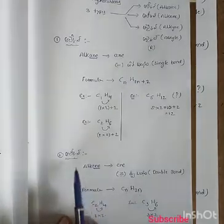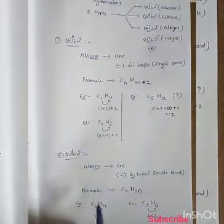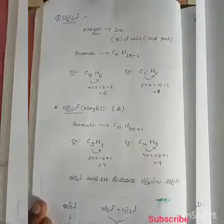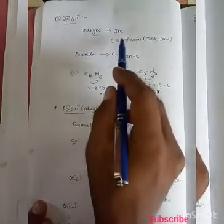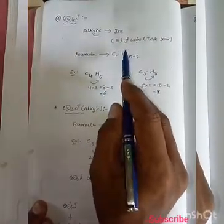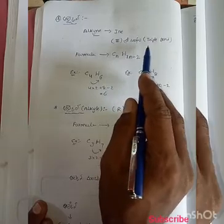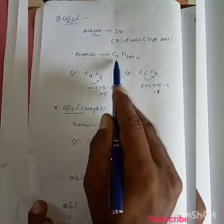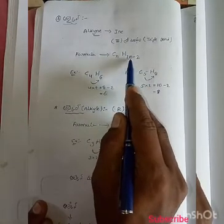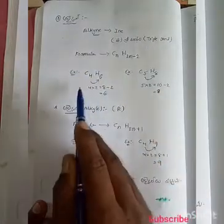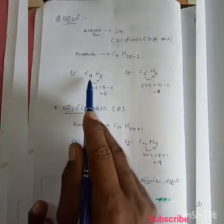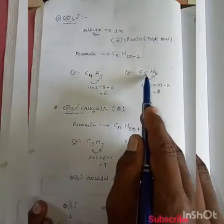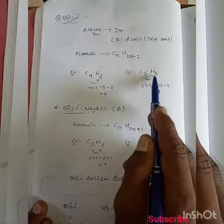Our compounds in code: alkynes — next, last one, alkyne. Alkyne has at least one triple bond. The general formula is CnH2n-2. For example, C4H6, C5H8 — these are alkyne compounds.